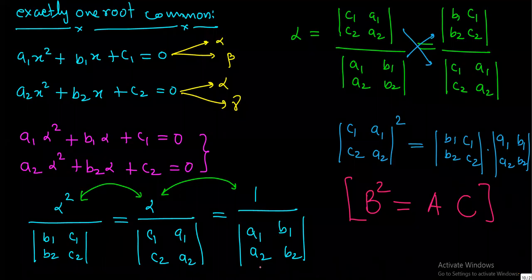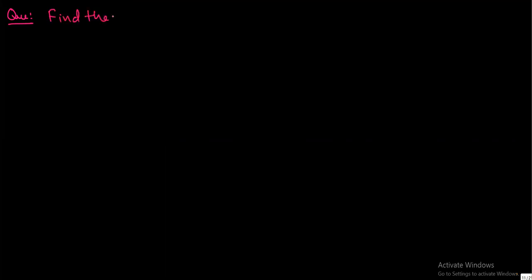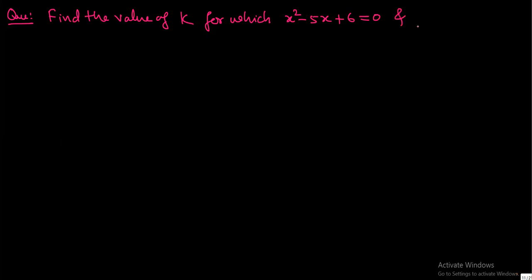Let's solve another question. Find the value of k for which x² minus 5x plus 6 equal to 0 and 2x² minus kx plus 6 equal to 0 has exactly one root common.